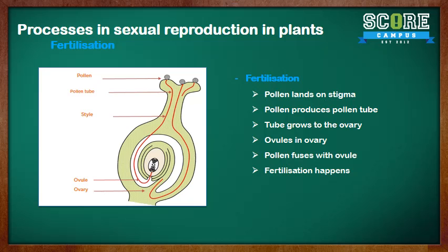So very quickly, the pollen lands on the stigma. When the pollen lands here, a pollen tube is produced which goes all the way through the style to the ovary. When the pollen cell and the ovules fuse, fertilization happens. And this is how fertilization happens in sexual reproduction in plants.